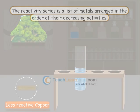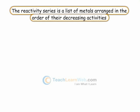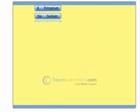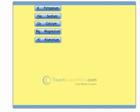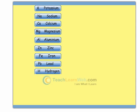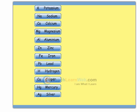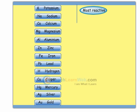The reactivity series is a list of metals arranged in order of their decreasing activities. Potassium, sodium, calcium, magnesium, aluminium, zinc, iron, lead, hydrogen, copper, mercury, silver, and gold are placed in the activity series. As we move down the activity series, the reactivity decreases in nature.